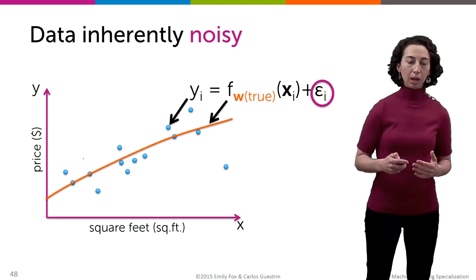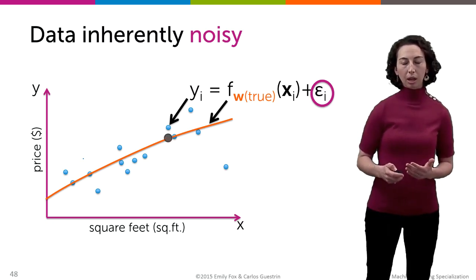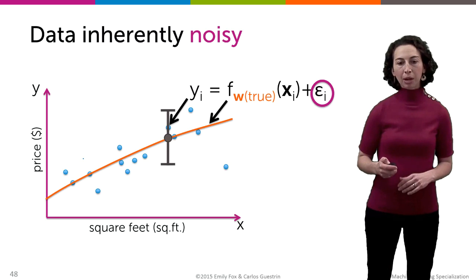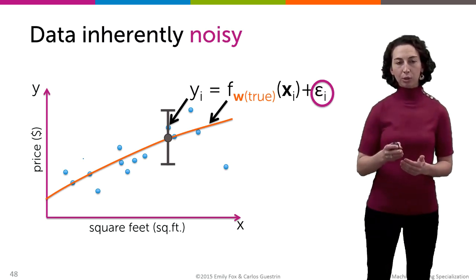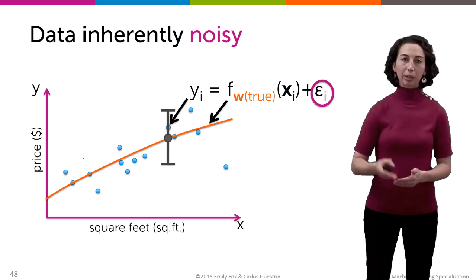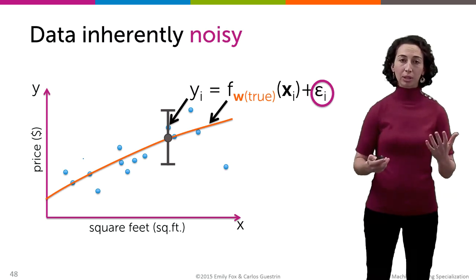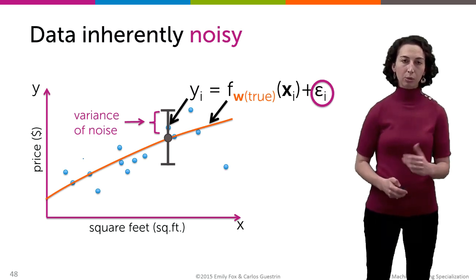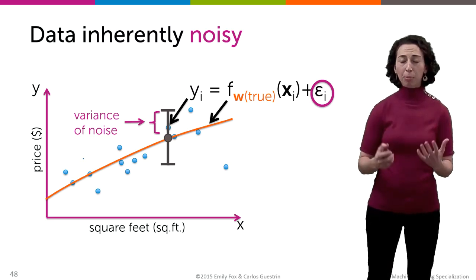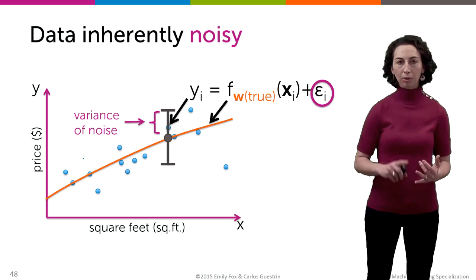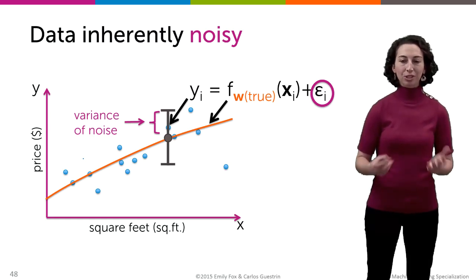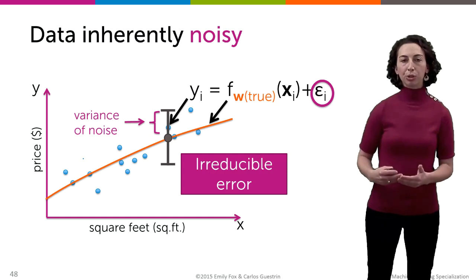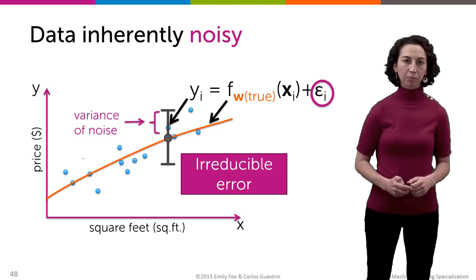And we've talked before about our assumption that this noise has zero mean, because if it didn't, that could be shoved into the f function instead. But what we haven't talked about is the spread of that noise. So at any given square feet, what kind of variation in house price are we likely to see based on this type of noise that's inherent in our observations? And so this is referred to as the variance of this noise term epsilon. And this is something that's just a property of the data. We don't have control over this. This has nothing to do with our model nor our estimation procedure. It's just something that we have to deal with. And so this is called irreducible error because it's nothing that we can reduce through choosing a better model or better estimation procedure.